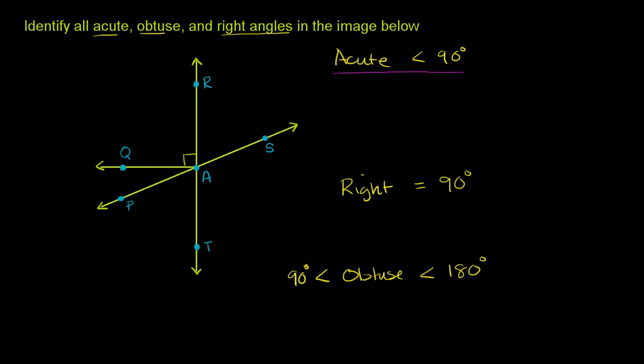So they tell us that this right over here is a right angle, so we already know one of the right angles is angle QAR, where A would be the vertex. You could also call it angle RAQ.